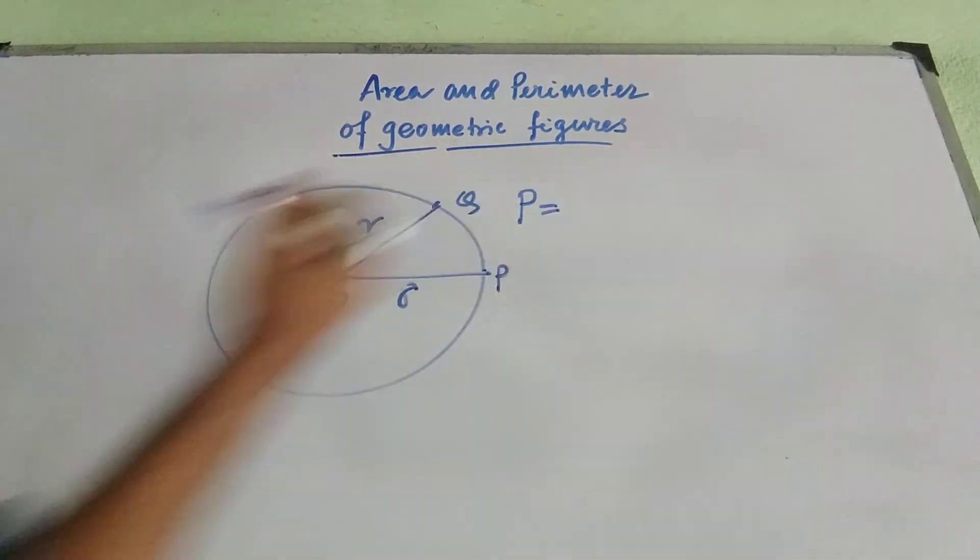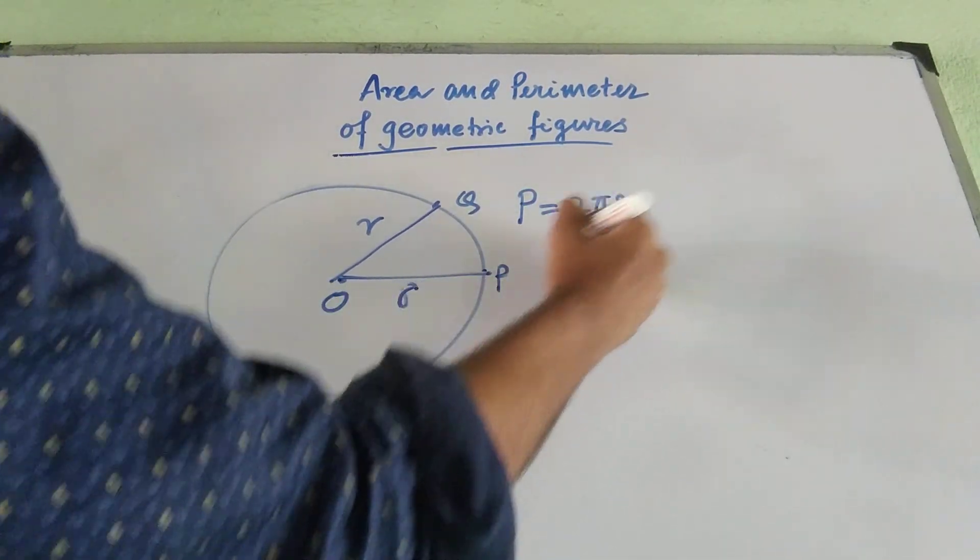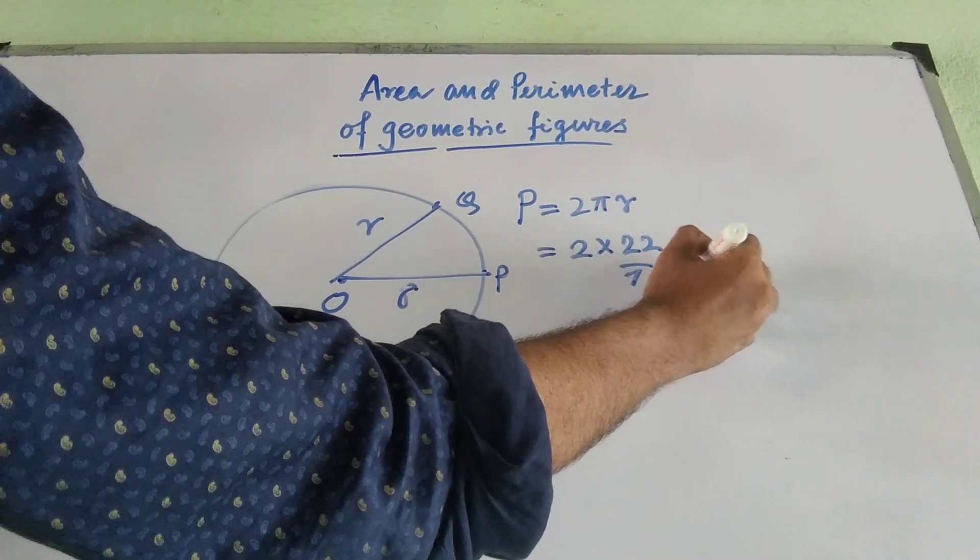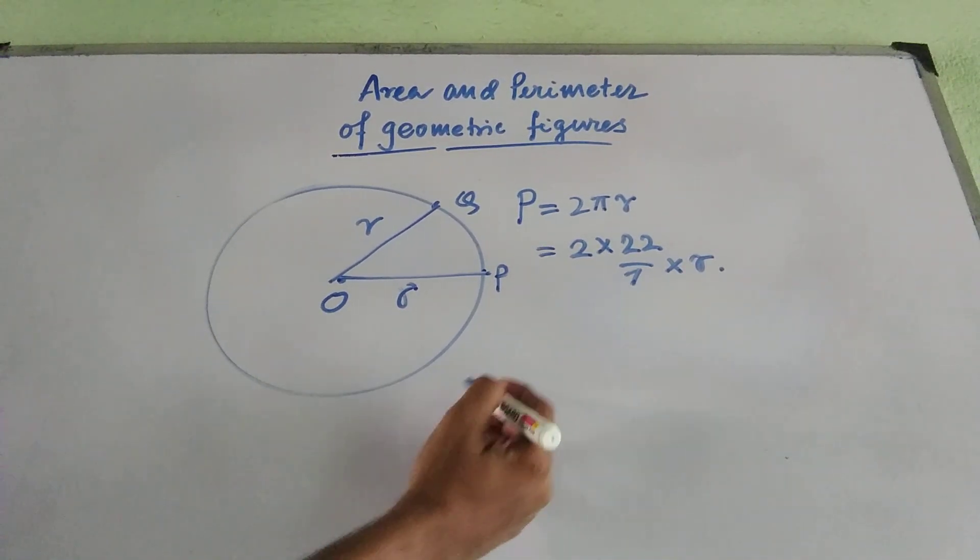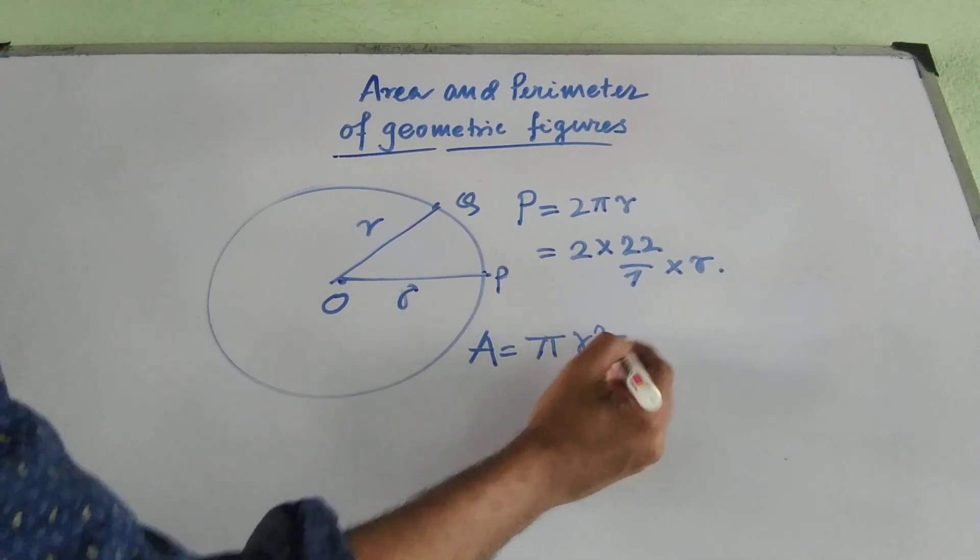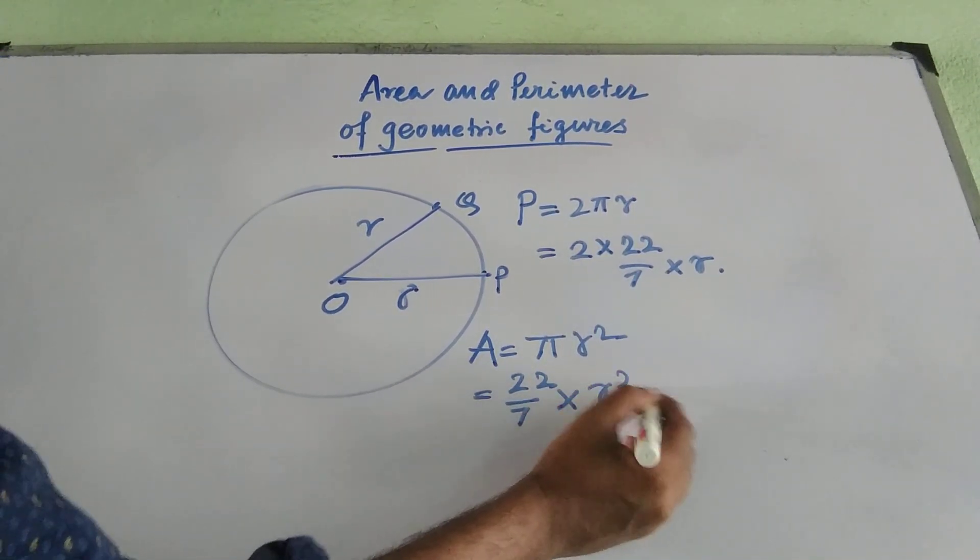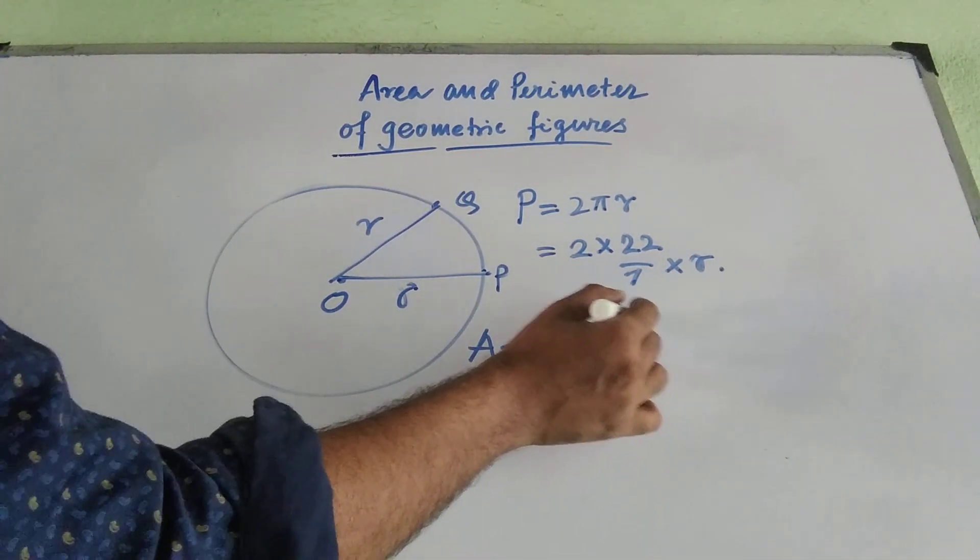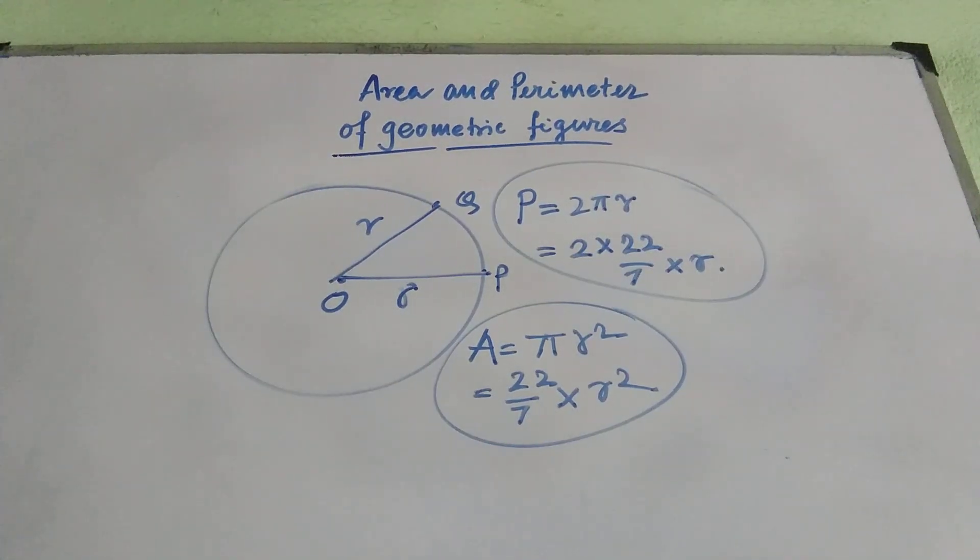Then in that case, perimeter formula for circle is 2 into pi into R. What is pi? Pi is 22 by 7 and R is the length of the radius. And what is area? Area is nothing but pi R square. That means, 22 by 7 into R square. So if we get to know the length of the radius of a circle, we will be able to find out the area and perimeter.